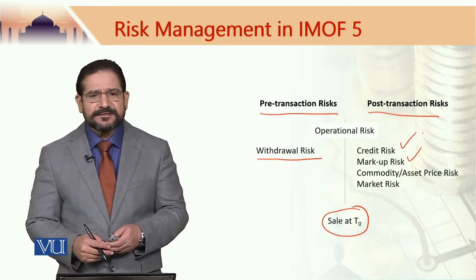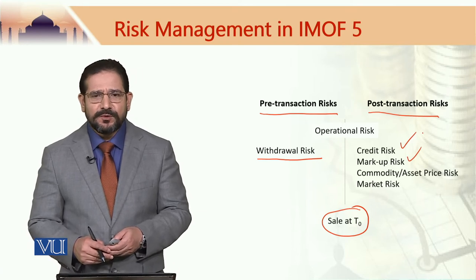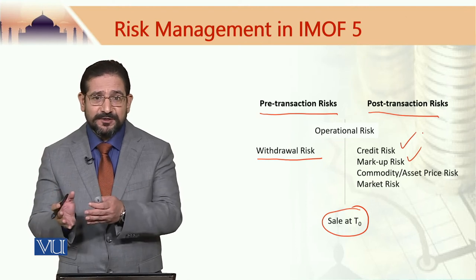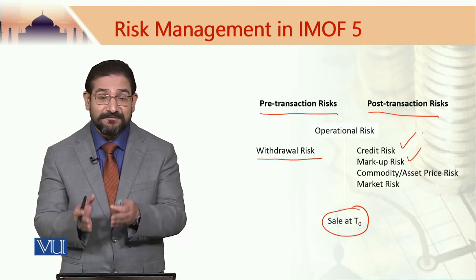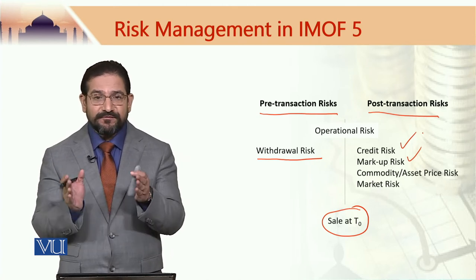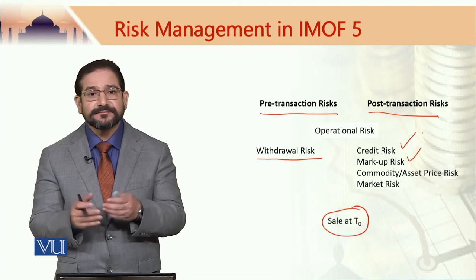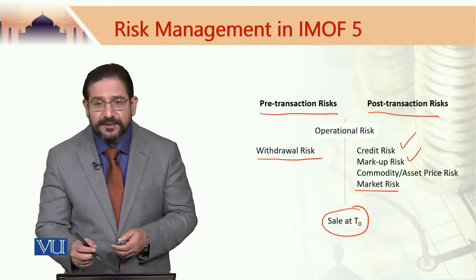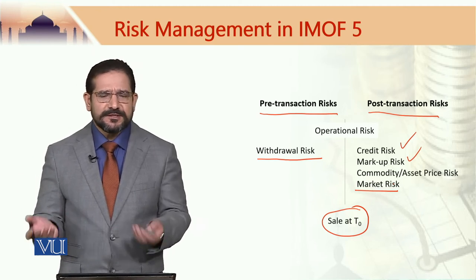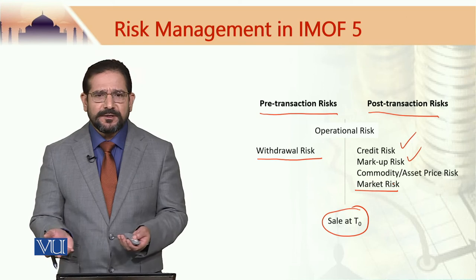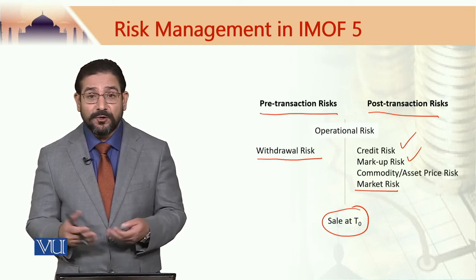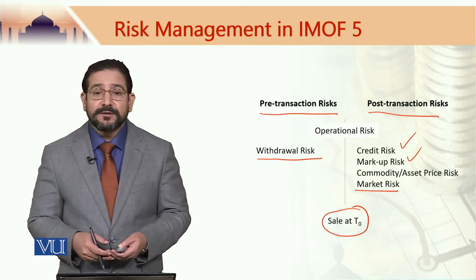Commodity asset price risk is very much relevant to the Salam transaction, because at the end of the day a commodity is going to be delivered and its price is going to be very relevant to the profitability of the transaction. Market risk in this case is very important as well. If anything happens in the market — there is a disruption — and the commodity is not readily available or not available at all, then there would be a problem.